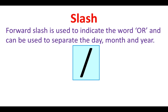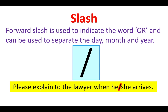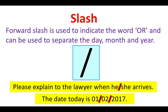A forward slash is used to indicate the word 'or' and can be used to separate the day, month, and year. For example: Please explain to the lawyer when he/she arrives. In this example the forward slash is used to indicate the word 'or'. The date today is 1/2/2017. In this example the forward slash is used to separate the day, month, and year.